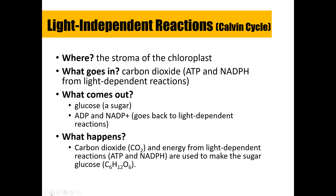The Calvin Cycle also produces NADP⁺. Both ADP and NADP⁺ move back into the light-dependent reaction to fuel the whole cycle again — so photosynthesis is indeed a cycle. To summarize the light-independent reaction: carbon dioxide and energy from the light-dependent reaction (ATP and NADPH) are used to make glucose, which is released as a byproduct of the Calvin Cycle.